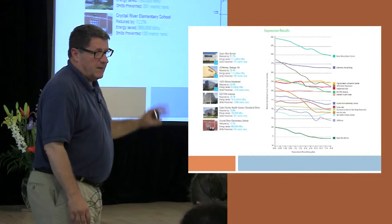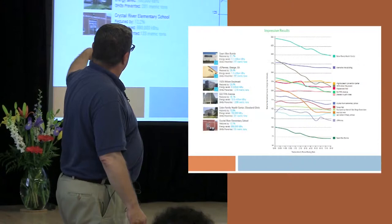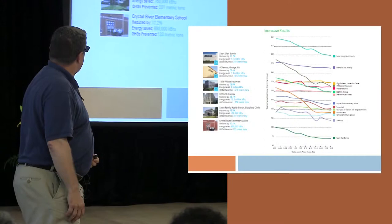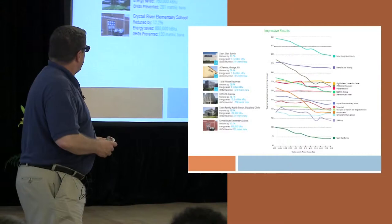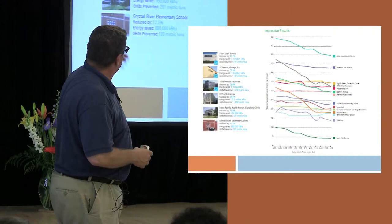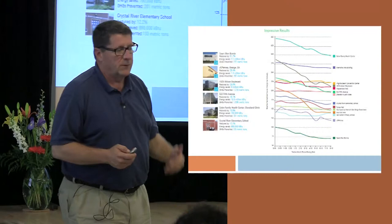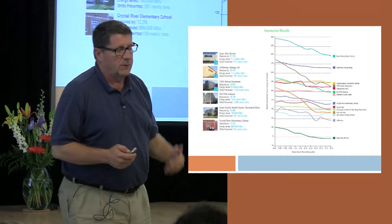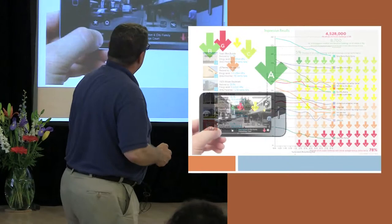Measure it and then manage it to some effective end point. For 522 Fifth Avenue specifically: 1,038 metric tons of greenhouse gases prevented. It's a multi-tenanted office building where you don't get to tell tenants what to do — they had to work with the tenants. Tenant education was a big part of this. And it was all based on measure and manage.